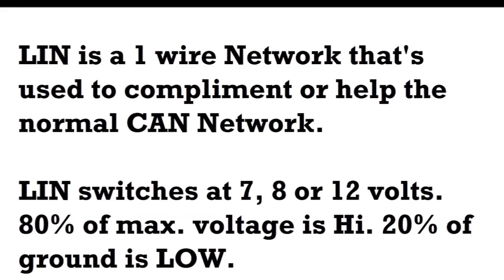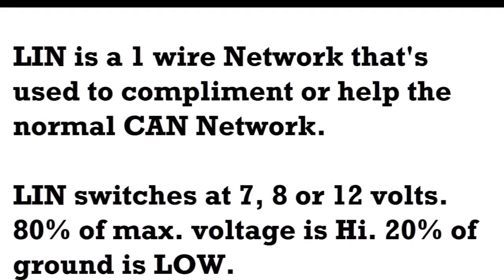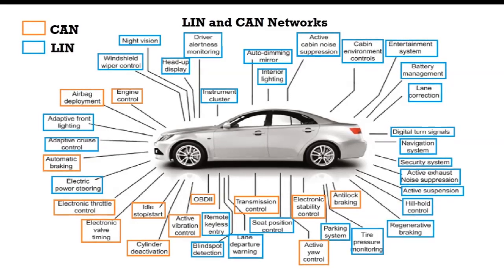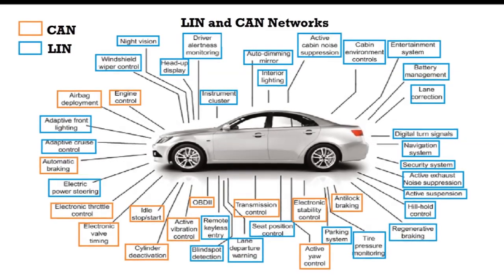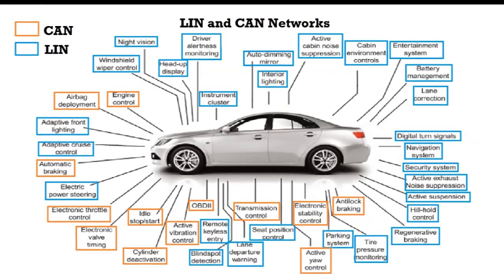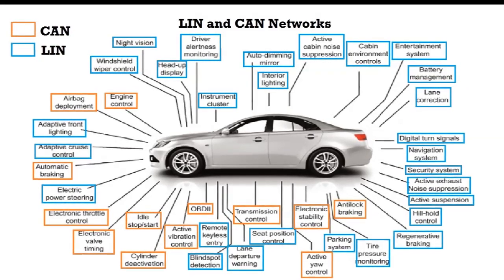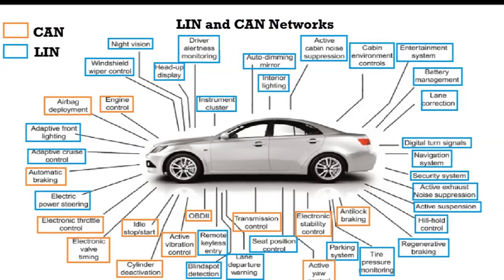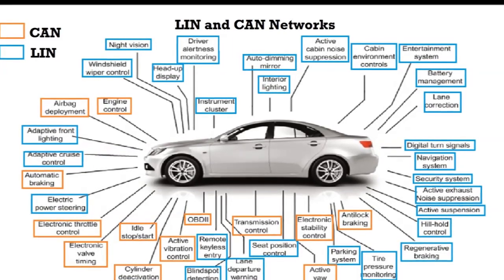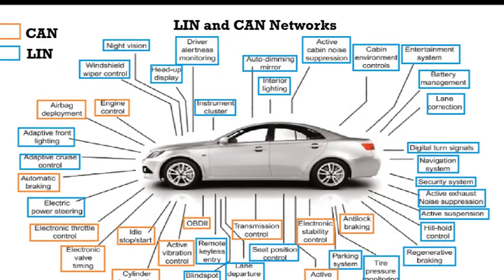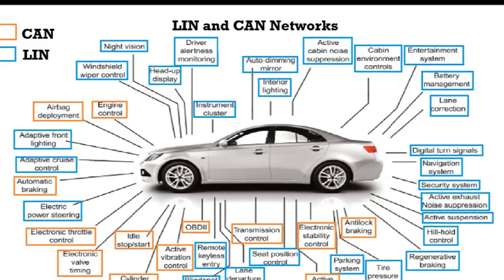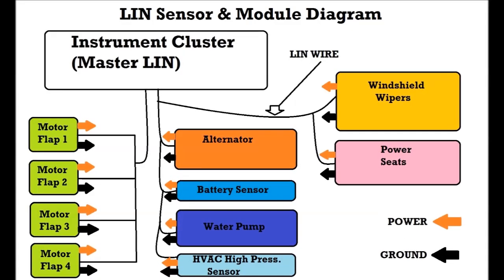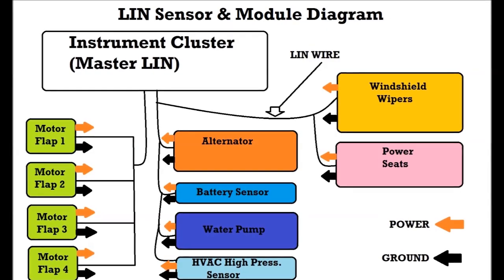The LIN bus is used in slower networks, mostly for less important components such as power windows, power seats, steering wheel accessories, and so on. It is also used to control alternators and it's now being used in sensors, like pressure sensors for the HVAC system.